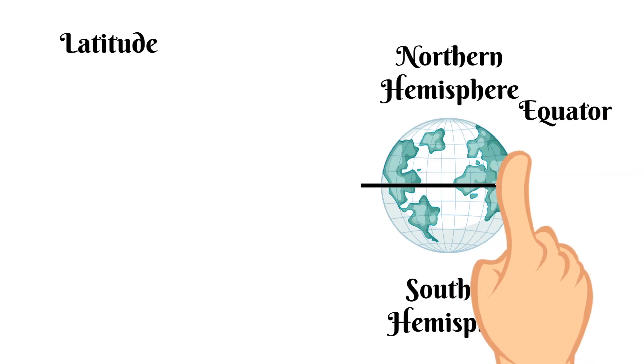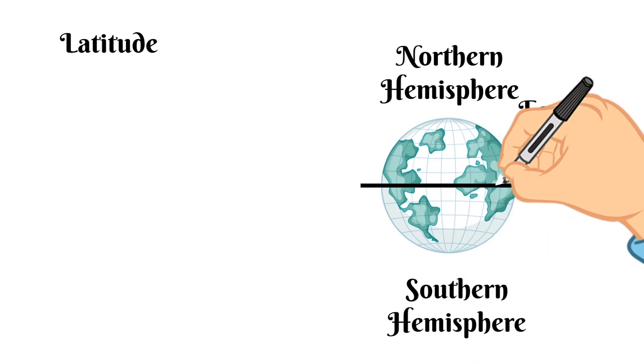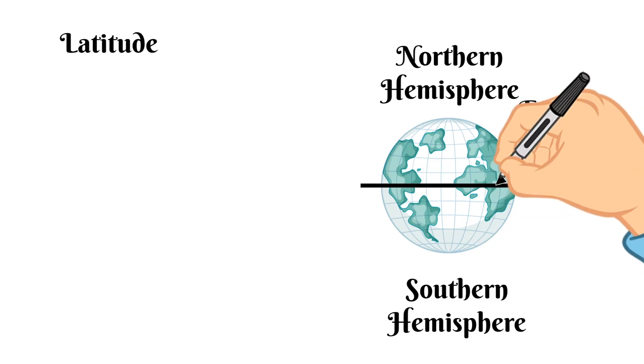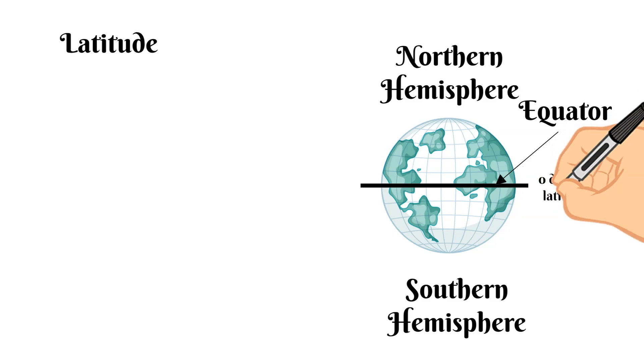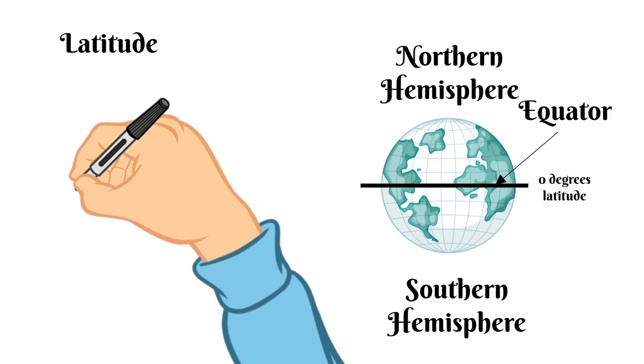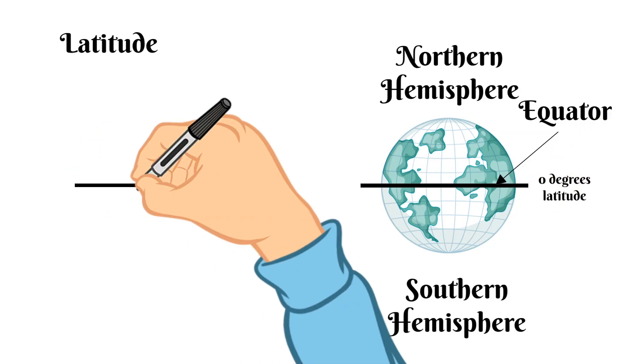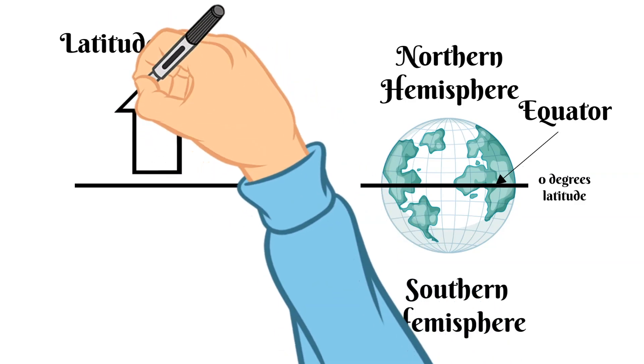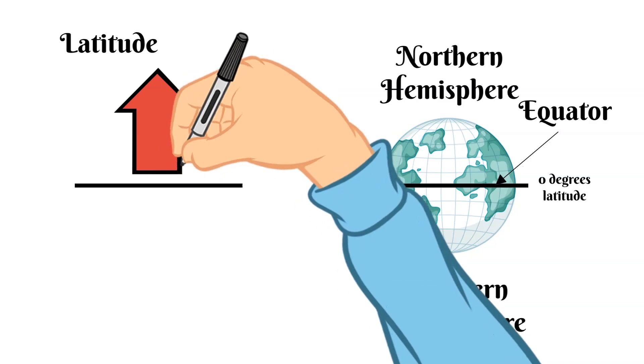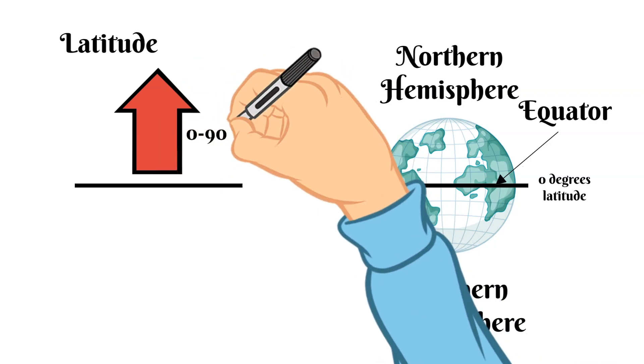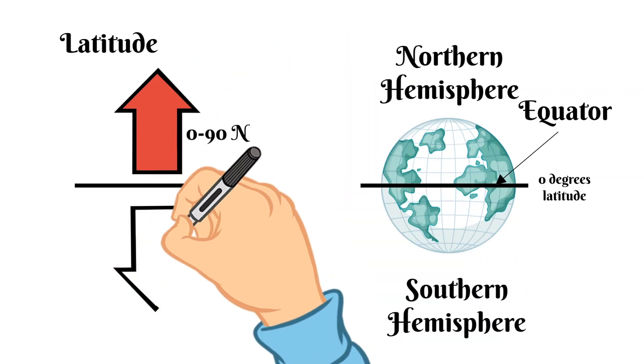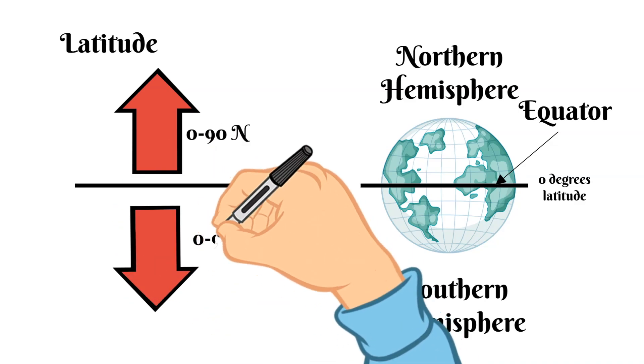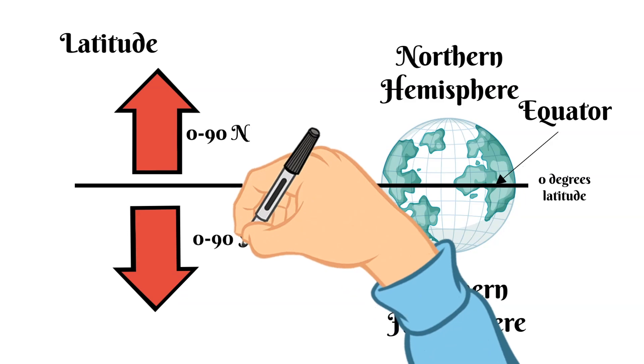This is a line that runs east to west around the earth's middle and is the starting point for latitude and so the equator is located at zero degrees latitude. Places north of the equator are part of the northern hemisphere and places south of the equator are in the southern hemisphere and so the lines go up from the equator in degrees and they are measured from 0 to 90 degrees north and 0 to 90 degrees south.